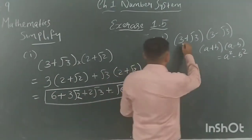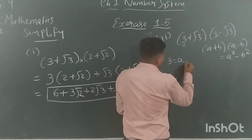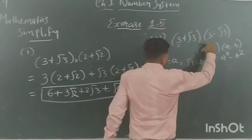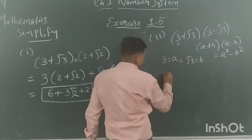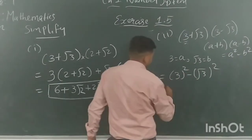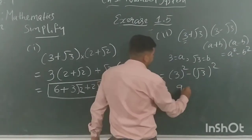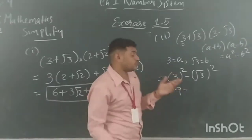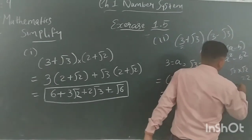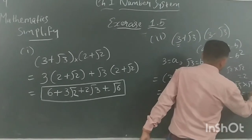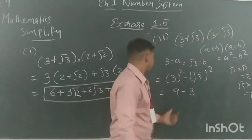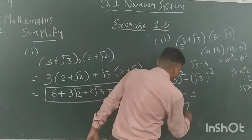Applying the formula: here a = 3 and b = root 3. So we get 3² minus (root 3)². 3² is 9. Now, (root 3)² means root 3 times root 3, which equals 3 — just as root 2 times root 2 equals 2. So we get 9 minus 3, which equals 6.